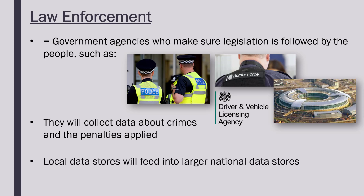The police and other agencies are not just one uniform body — they are divided into local areas. There is a police force for London, for Manchester, for different counties, and the data they collect locally will be combined at some stage into a larger national database. A data store is just a set of data sets — multiple data sets related to the same thing, in this case law enforcement. All the individual local data stores, which may be small data, will combine into the larger national database, which may be considered big data.